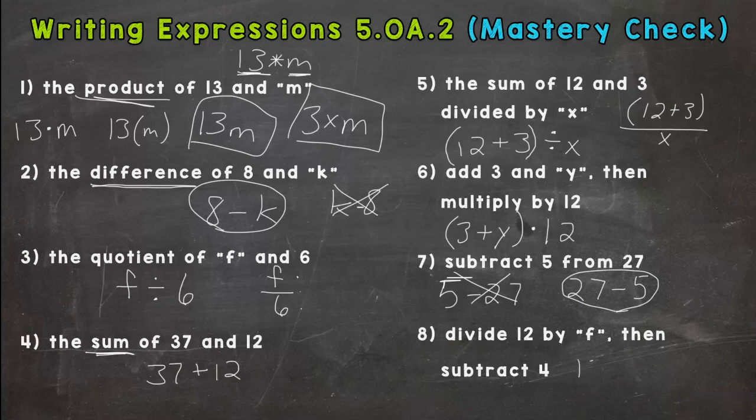And then number 8, divide 12 by F, then subtract 4. So 12 divided by F, or if you use fractional notation that would be fine too. We're going to put this in parentheses because we need to do it first, then subtract 4.